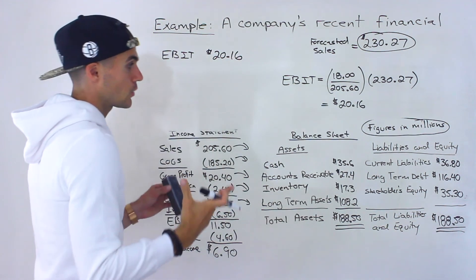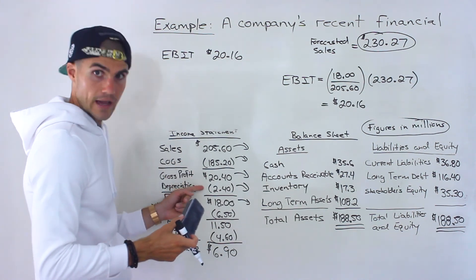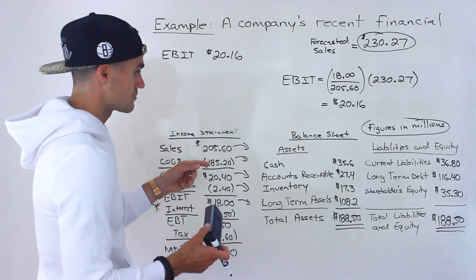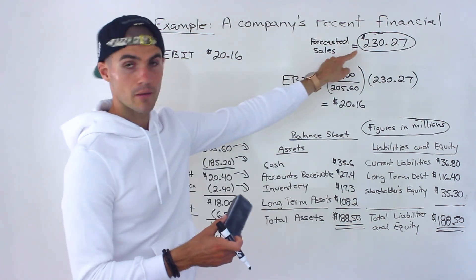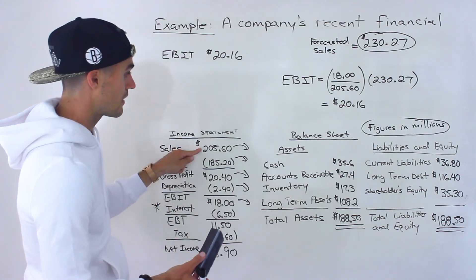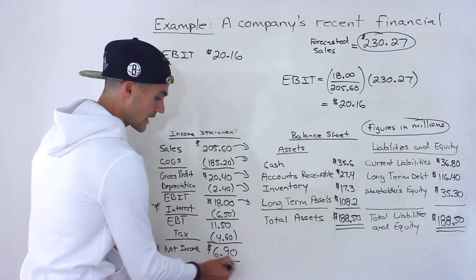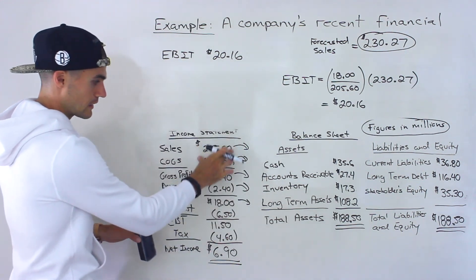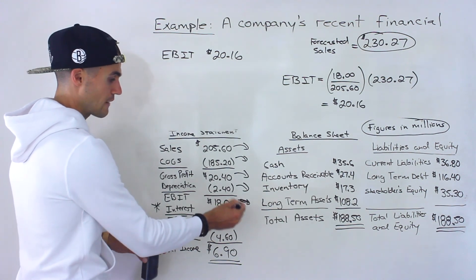If they asked for forecasted cost of goods sold or forecasted depreciation, you'd use the same process: divide the current amount by current sales, then multiply by forecasted sales. But in this case, they're only asking for the forecasted net income, so we can jump straight to EBIT and find that forecasted amount, then handle everything below it manually.